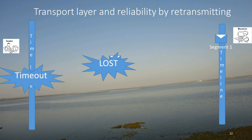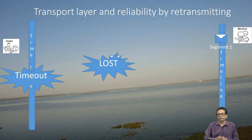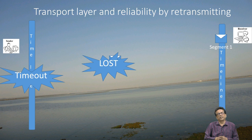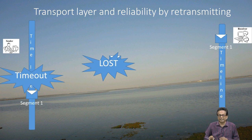The data unit here is known as a segment. Every layer has a different name for its data unit: at the data link layer it is called a frame, at the network layer it is called a packet, and at the transport layer it is called a segment. Now, you can see that here the acknowledgement is lost. Because the acknowledgement is lost, there is no reliable communication, but the sender runs something called a timer which times out if the acknowledgement does not come back in time. This timeout event actually forces the sender to resend the very segment.